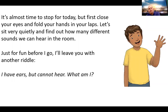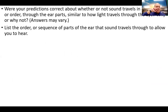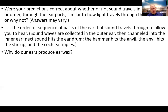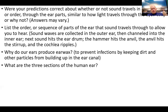It's almost time to stop for today, but close your eyes, hold your hands on your laps, and let's sit very quietly and find out how many different sounds we can hear. Now, list the order of sequence of parts of the ear that sound travels through to allow you to hear. Sound waves are collected in the outer ear, go to the ear canal, hit the eardrum, then the hammer, then the anvil, then the stirrup, then the cochlea ripples. Why do ears produce earwax? To keep out infections and dirt. What are the three sections of the human ear? Outer ear, middle ear, and inner ear.